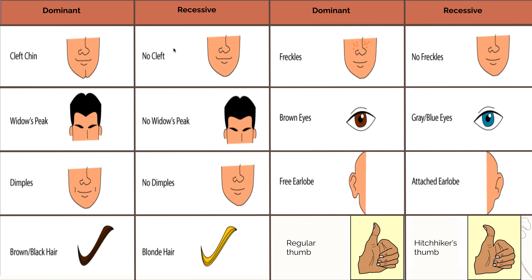Let's go through some dominant and recessive traits. Remember: if you are dominant, you have at least one dominant allele in your genotype. If you're recessive, you have to have two recessive alleles. Dominant will always show if it's present; recessive needs two copies. Dominant traits are like Sharpies, recessive traits are like pencil — if there's a Sharpie present, all you're going to see is the Sharpie.